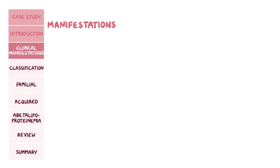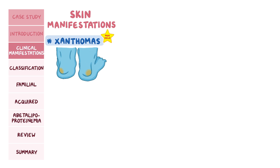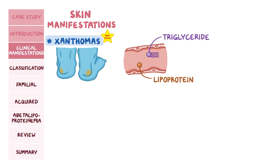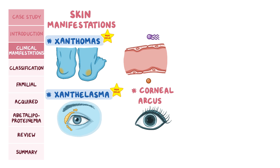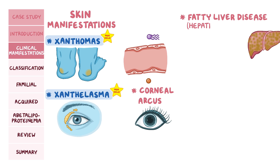Beginning from the outside, skin manifestations include xanthomas, which are deposits of fat under the skin and in the tendons. These occur when extremely high levels of lipoproteins or triglycerides in the blood leak out of the blood vessels. When these deposits occur around the eyelid, it gets a special name: xanthelasma. Lipids can also deposit around the cornea, creating a brown ring of fat called the corneal arcus. Lipid deposition in the liver can cause fatty liver disease, also called hepatic steatosis.